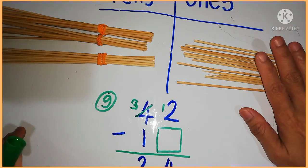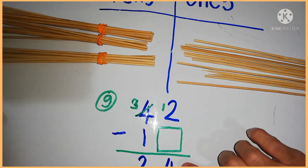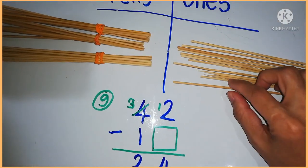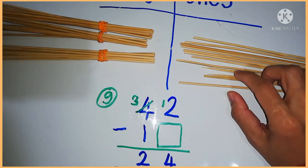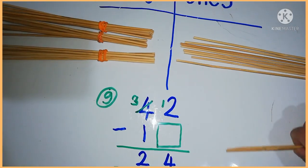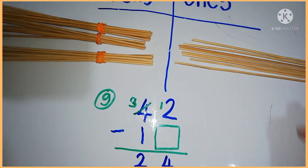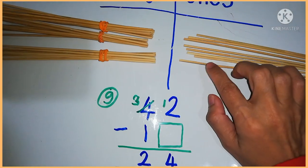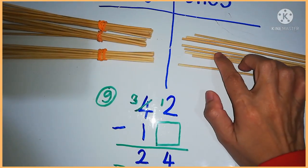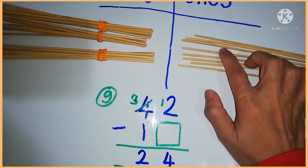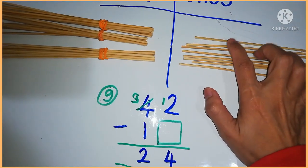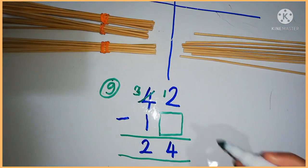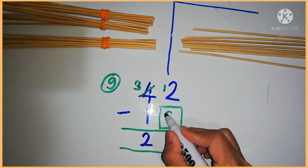Now we have to minus 4: 1, 2, 3, 4. So how many are left? 1, 2, 3, 4, 5, 6, 7, 8. Eight left. So the ones digit of the missing number is 8.